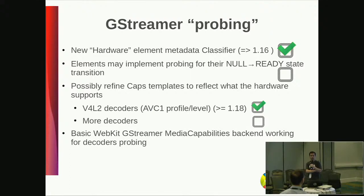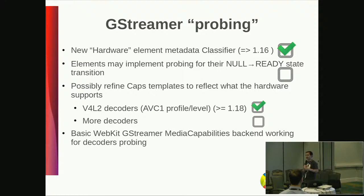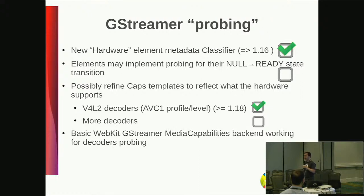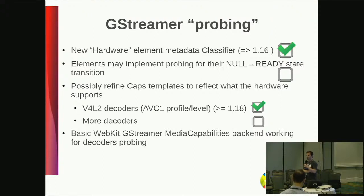We also added support where every plugin can advertise which capabilities — called caps in GStreamer — it supports. For specific plugins such as Video for Linux, we refined those caps based on what's supported in the kernel. I did that for AVC1, and it could also be done for VP9 and VP8. For more decoders such as VAAPI, it should be done as well if possible. We have that working for decoding; for encoding, which would be useful for WebRTC, it still needs to be done.